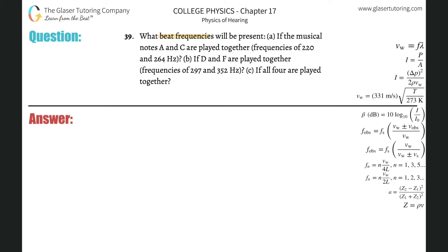Number 39: What beat frequencies will be present if the musical notes A and C are played together, frequencies 220 and 264 Hz? For part A, there's a review from chapter 16. Beat frequency is simply the absolute value of the frequency difference: f2 minus f1.